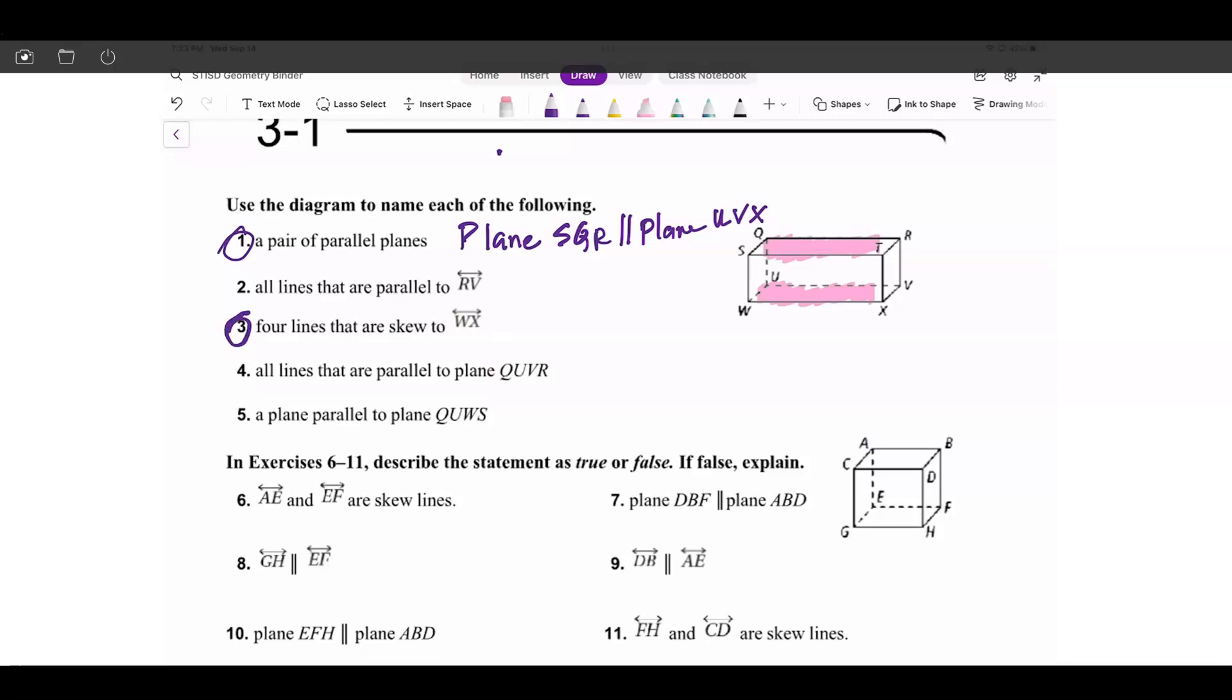Skew. I'm going to erase this here. I'll show you a skew line, or a set of skew lines. We have WX, so you see TR, that's skew, SQ, that's skew, and of course, the ones that are in the back that are dotted, QU, and RV.